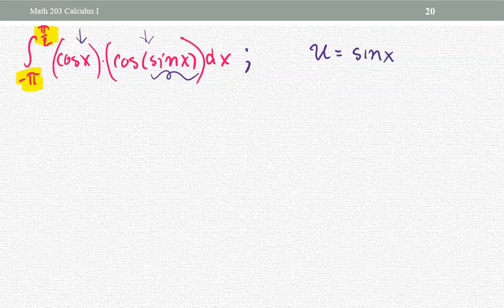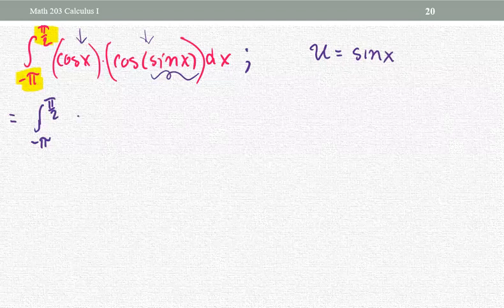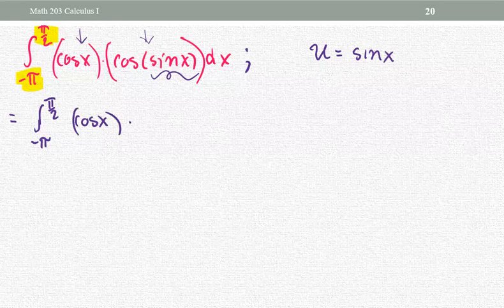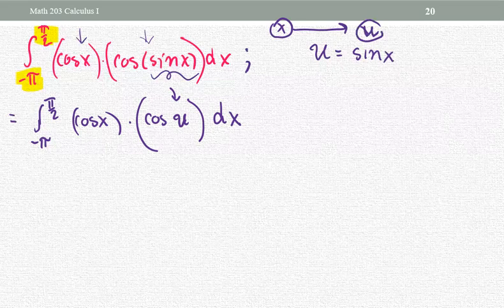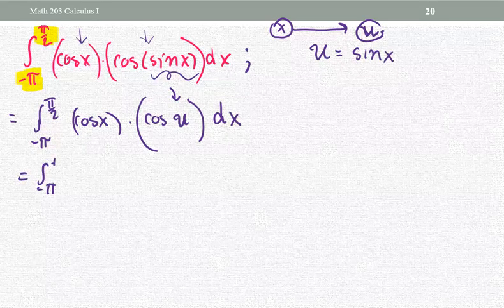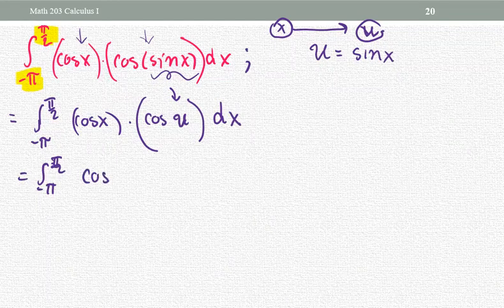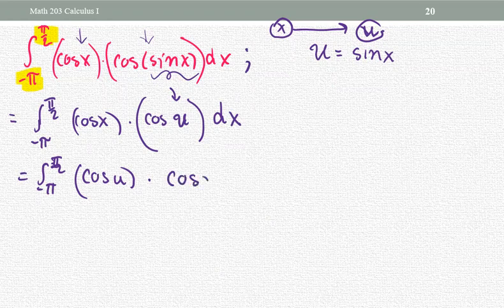So u equals sine x. If you're not quite sure, just work on one piece at a time and see what happens. We have the lower limit negative pi, upper limit pi over two. We leave cosine x as it is and work on the innermost part first, replacing that portion with cosine of u with respect to x. The goal is changing the x group totally into the u group. Next, we regroup: cosine u multiplied by cosine x dx, so we can work on the cosine x dx piece.